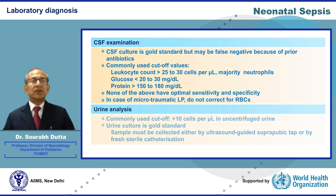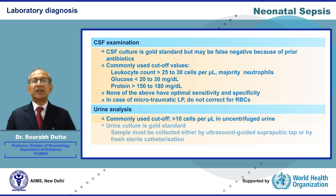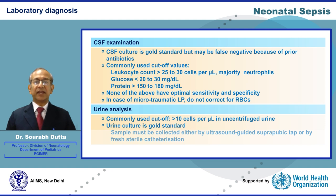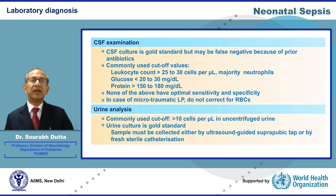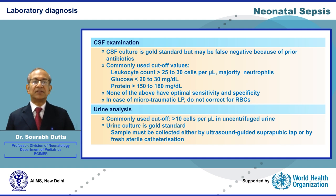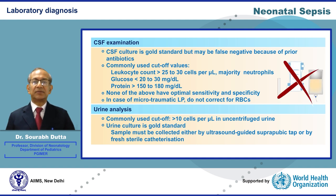To diagnose urinary tract infections, urine must have more than 10 white blood cells per microliter in uncentrifuged urine. Urine culture is the gold standard, and the sample must be collected either by ultrasound-guided suprapubic tap or by a fresh sterile single catheterization. Samples taken from test tubes, diapers, or urine bags are not acceptable due to a high risk of contamination.